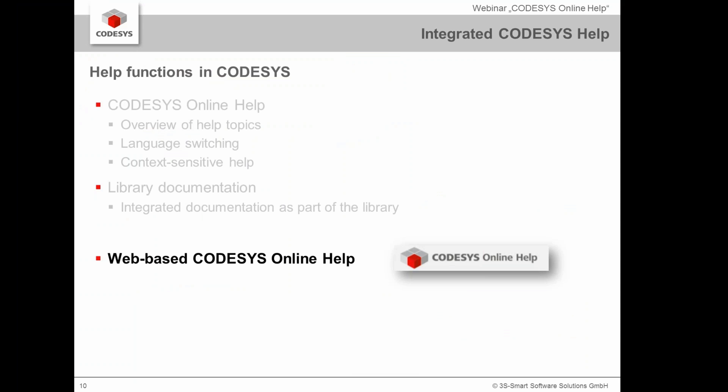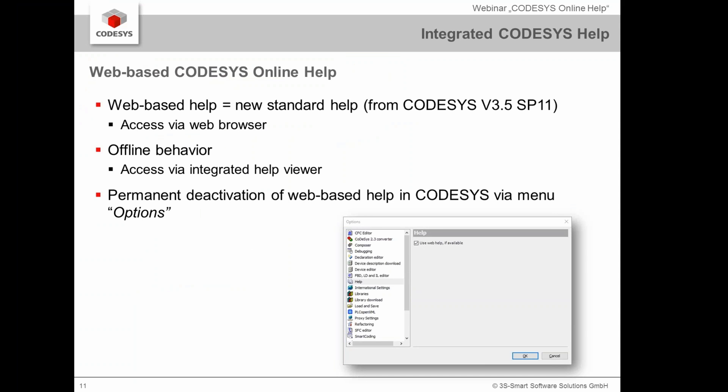The main topic of today is the new CODESYS online help, which is web-based. This is the new standard help from CODESYS version 3.5 SP11, released last week. The biggest difference is that you access this online help via web browser and the Internet. CODESYS is not always connected to the Internet, so if you're offline you still have access to the integrated old help. You can also permanently deactivate the web-based help via the CODESYS menu.